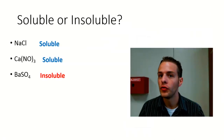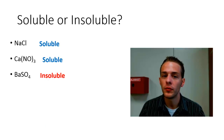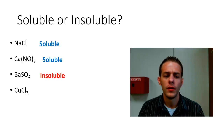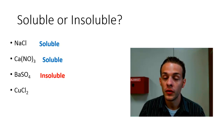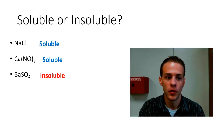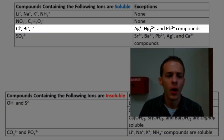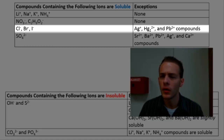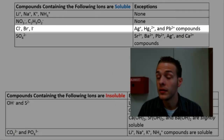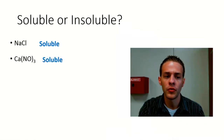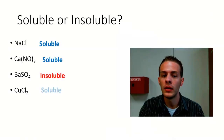So barium sulfate is actually insoluble in water — sulfates are generally soluble, but barium sulfate is an exception. Next: copper chloride. The solubility rule for chlorides says they are generally soluble, with exceptions only for silver, mercury, and lead. Copper is not one of those exceptions, so copper chloride is soluble in water.